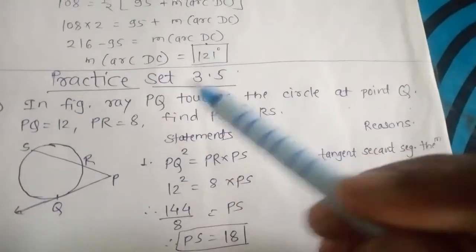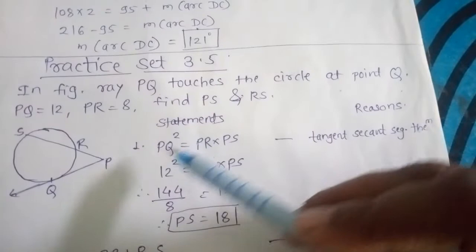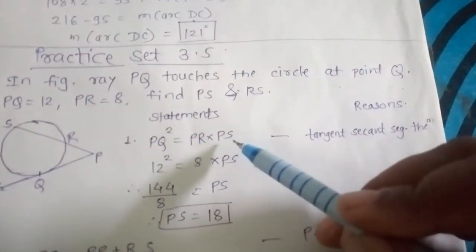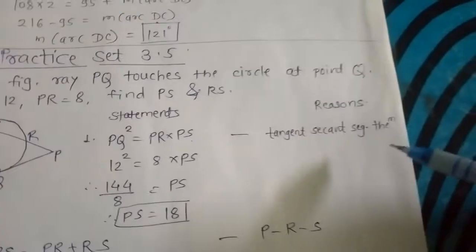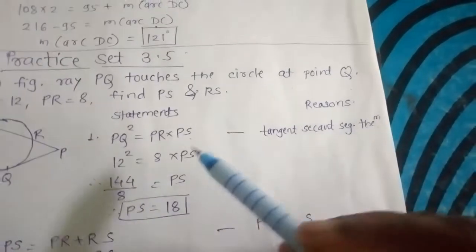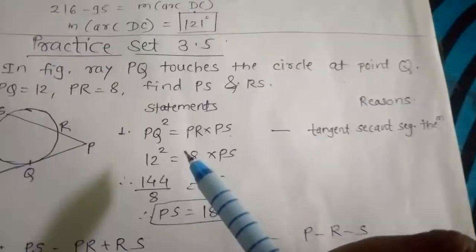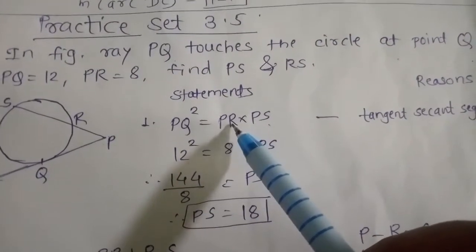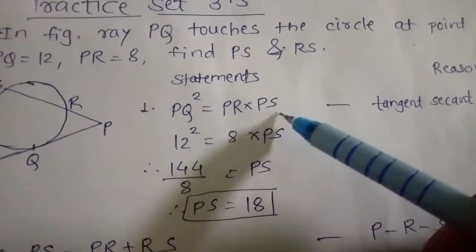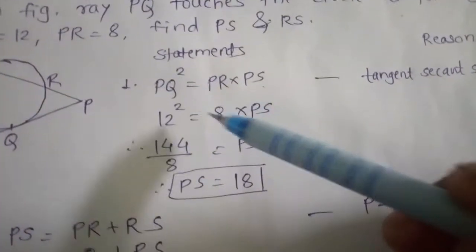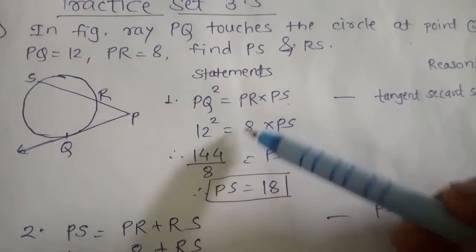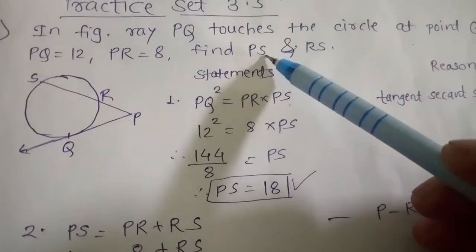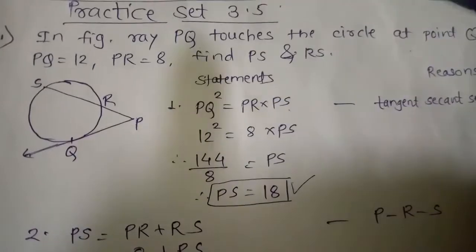We are going to apply the tangent-secant segment theorem: PQ² = PR × PS. The value of PQ is 12, so 12² = 8 × PS. That gives 144 ÷ 8 = PS, so PS = 18. Now we have to find RS.